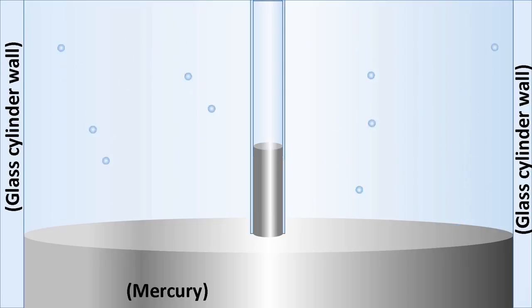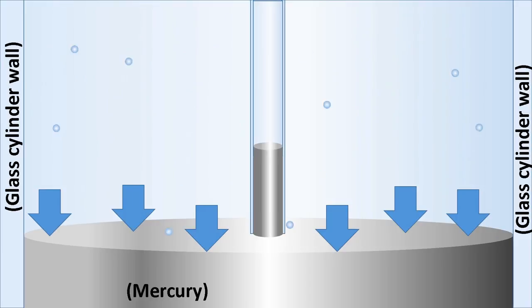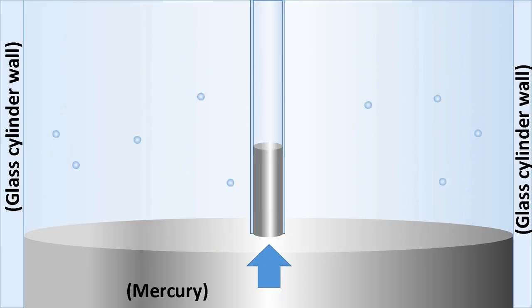Air molecules constantly collide with the surface of this pool of mercury with a downward force. This leaves the mercury with nowhere to go but up the tube.